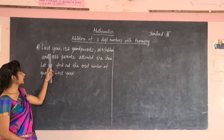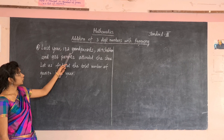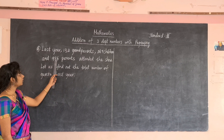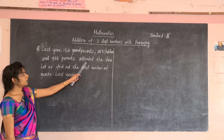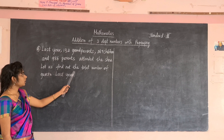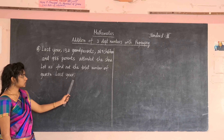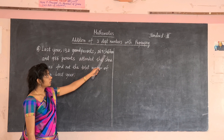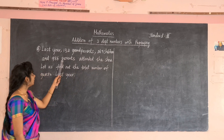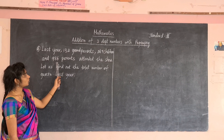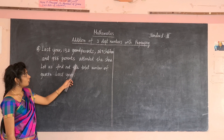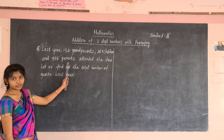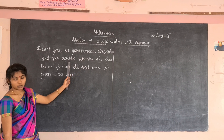Now we shall see the second sum. Last year 132 grandparents, 267 children, and 986 parents attended the show. Let us find the total number of guests last year. There are three numbers — grandparents, children, and parents are the guests here — so we have to add these three numbers.